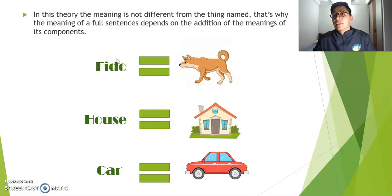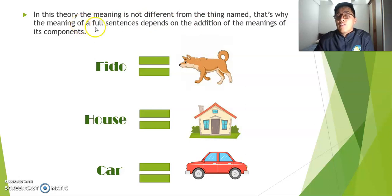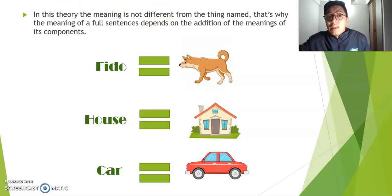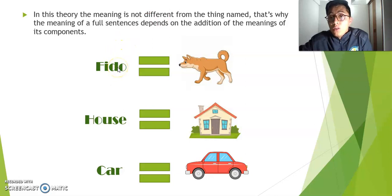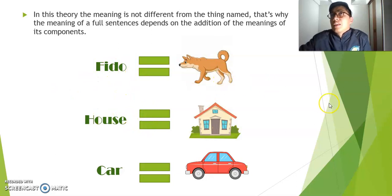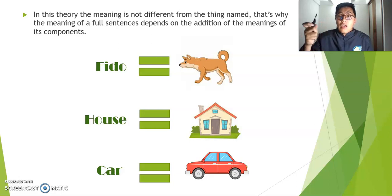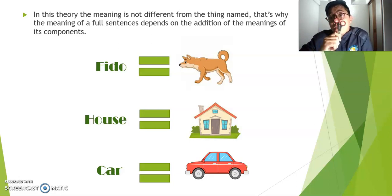The other characteristic that we should know about this theory says this: in this theory, the meaning is not different from the thing named. That's why the meaning of a full sentence depends on the addition of the meanings of its components. The thing is that the meaning is not different from the thing named. So what does it mean? That means that when you say a word, you express the meaning that you wanted to express, and that word is exactly the same as saying the thing itself — for example, let me show you something: I have these scissors.